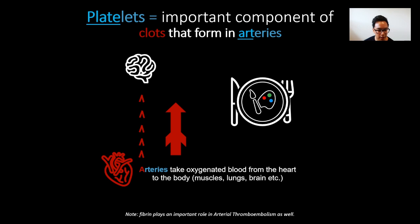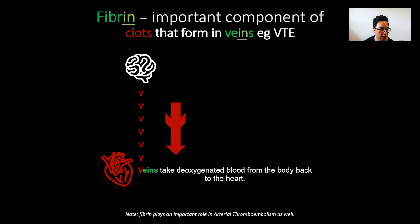A mnemonic 'Plate-Art' is an easy way to remember that platelets are important in clots forming in the arteries — fibrin is also part of those clots, but platelets are the key component. Fibrin, on the other hand, is an important component of clots that form in the veins — remember that with 'fibrin-veins.' Veins take deoxygenated blood from the body back to the heart, like an arrow pointing down from the brain back to the heart.